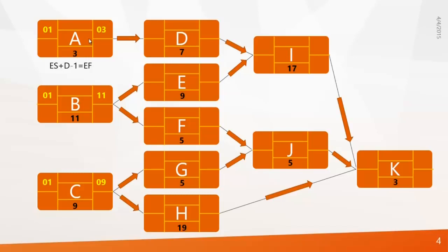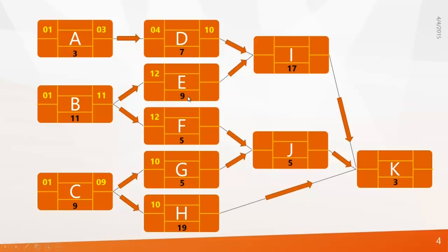Now for Activity D, which waits for Activity A to complete on Day 3 — so Activity D starts on Day 4. The equation is: Early Finish + 1 = Early Start of the next activity. Similarly, E and F start after B, on Day 12. G and H start on Day 10. Now we can calculate Early Finish for level 2 activities: D is 4 + 7 − 1 = 10; E is 12 + 9 − 1 = 20; F is 16; G is 14; H is 28.